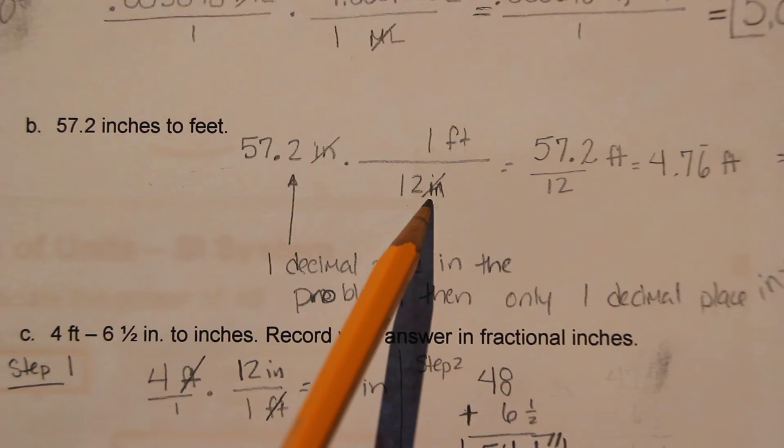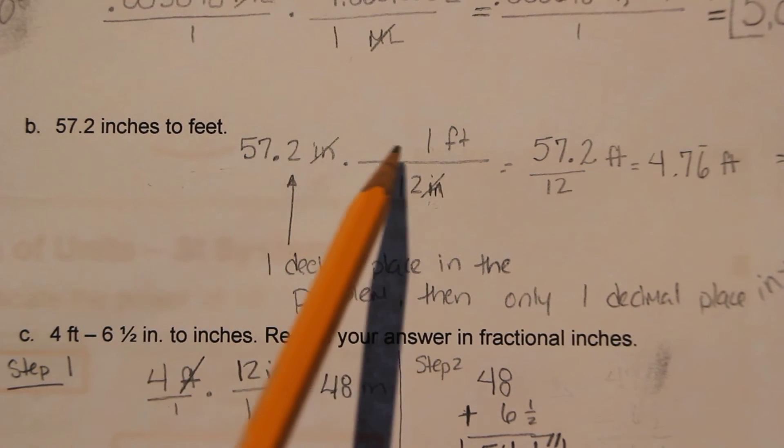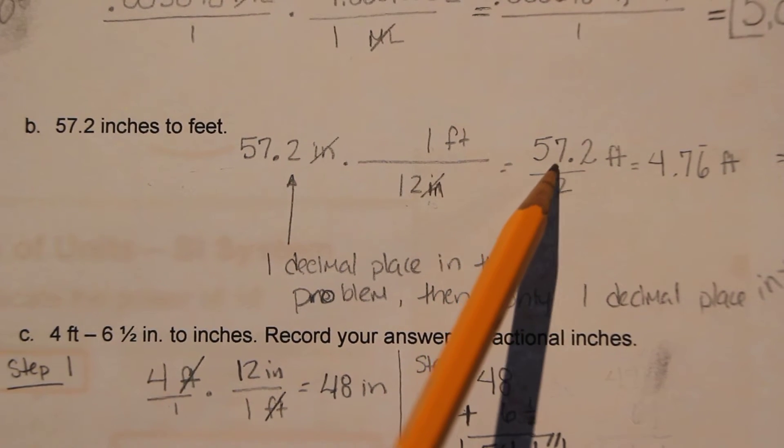So inches will cancel with inches. And now we're able to multiply straight across the top. So it's 57.2 feet over 12,